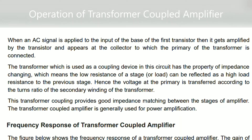The transformer used as a coupling device has the property of impedance changing. The low resistance of one stage can be reflected as a high load resistance to the previous stage. Hence the voltage at the primary is transferred according to the turns ratio of the secondary winding of the transformer.